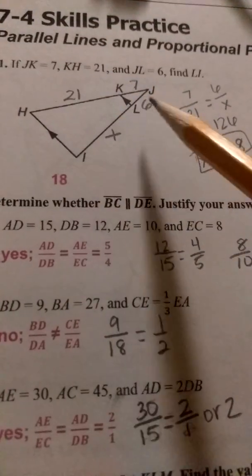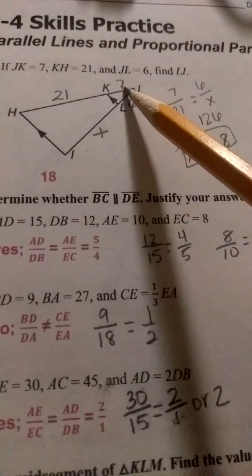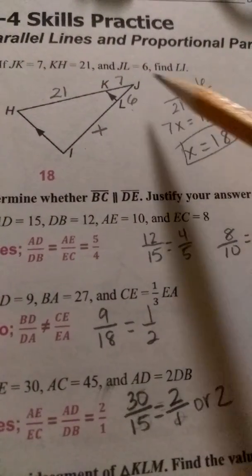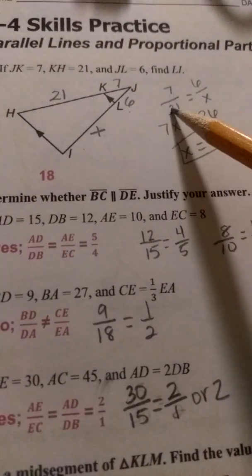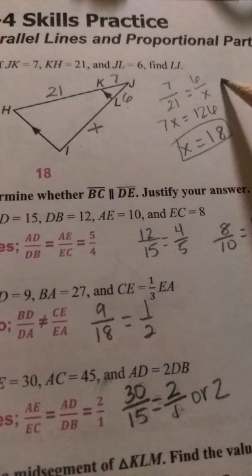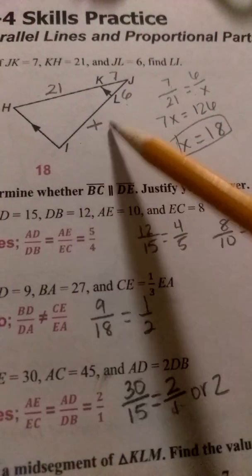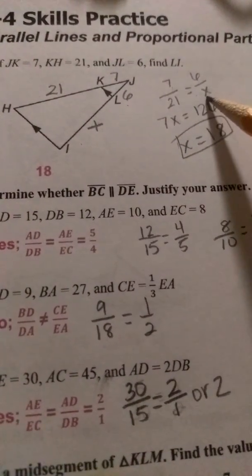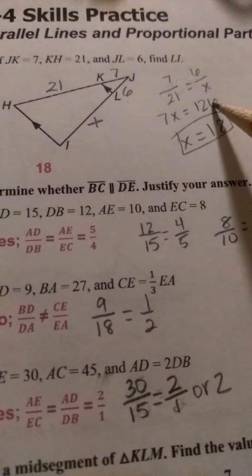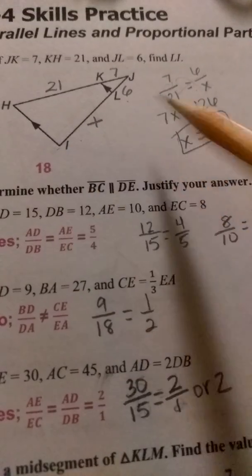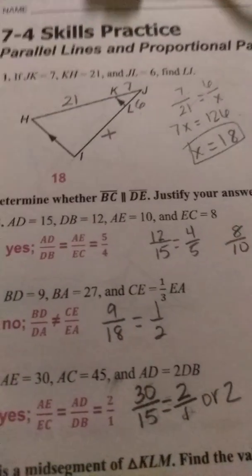You see I've labeled each one of these. And so basically all we have to do is set it up in a proportion, comparing the sides on the same side together. So 7 over 21 is equal to 6 over X, which is what we're looking for. We cross multiply, 7X equals 126, and then LI measures 18 after you solve for X.